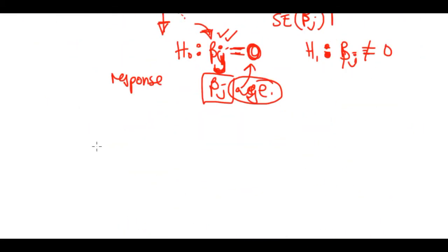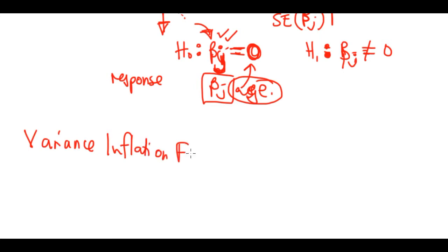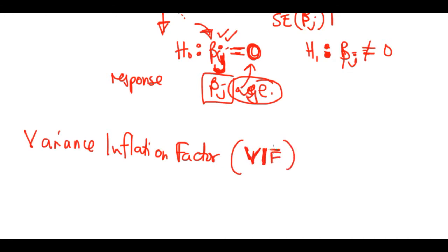A better way to identify collinearity is to use something called the Variance Inflation Factor, or VIF. R typically outputs the VIF automatically when you run your model.